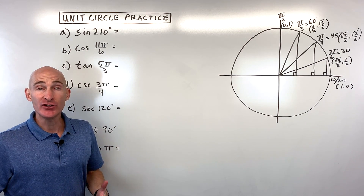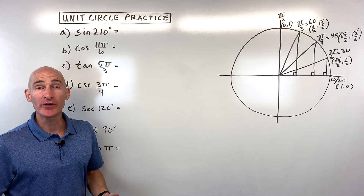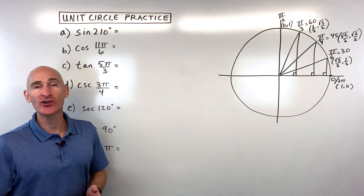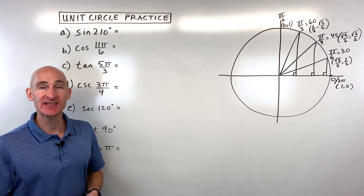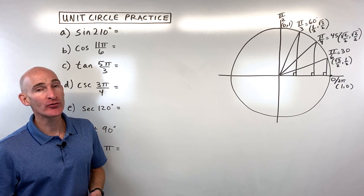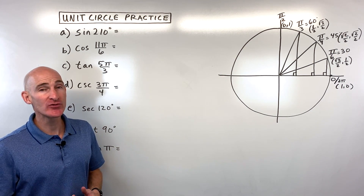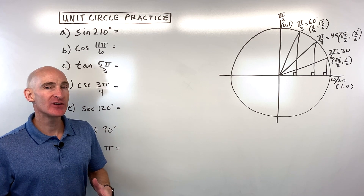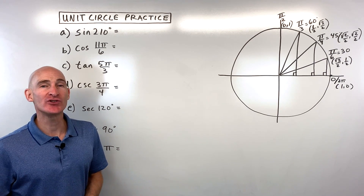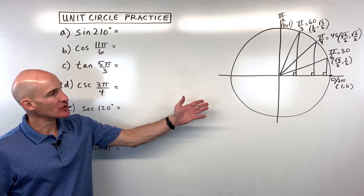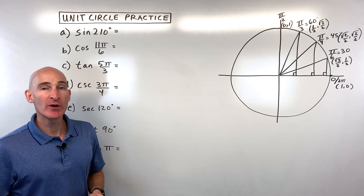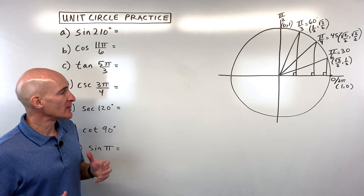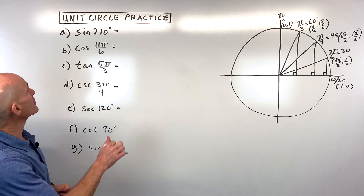In this video we're going to practice the unit circle. We're going to find trig values in radians and degrees — sine, cosine, tangent, cosecant, secant, cotangent. We're going to go through 26 examples, A through Z. I encourage you to pause the video and practice these problems. If you can get all of these right, you've mastered the unit circle. Try to do it from memory if you can. Let's dive in.